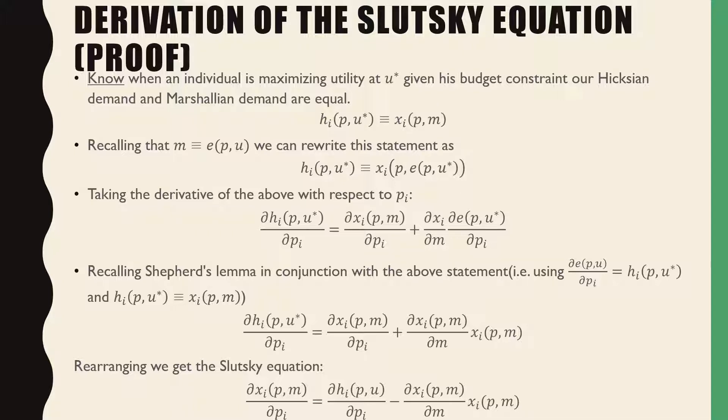we get our partial derivative of our Hicksian demand for good I with respect to the price of good I is equal to our Marshallian demand for good I with respect to the price of good I plus the partial derivative of our Marshallian demand for good I with respect to income and our partial derivative of our expenditure function with respect to price.